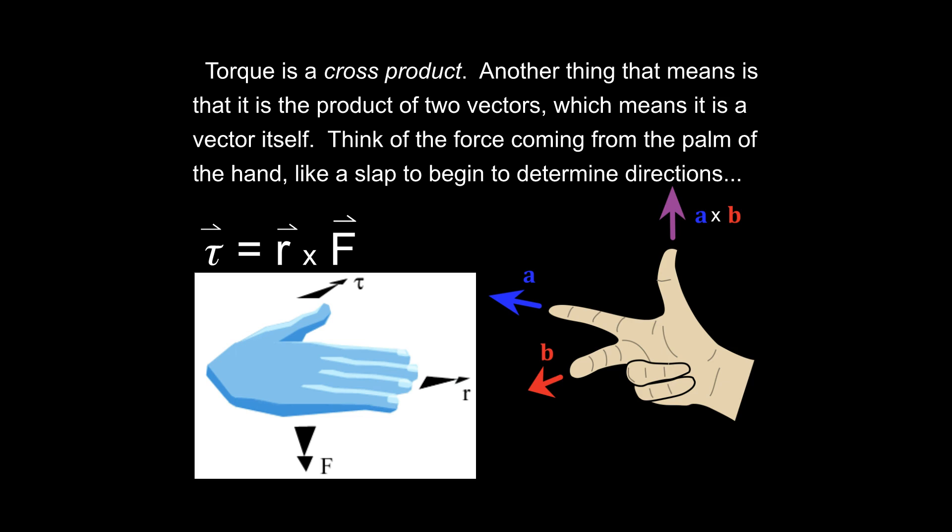This is useful in multiple concepts in physics. So one concept that we use this is in torque. Torque is a cross product. And so one of the things that we mean by that is that you can set up a right hand rule like we have over here and think through what that would mean. If you imagine that the force is coming out of the palm of the hands then the direction of the fingers would show the direction of the other vector. In this case the R value, your torque vector would be in the same direction as the right thumb.